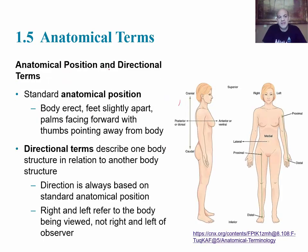Looking at the anatomical position and directional terms, the first thing is to understand what is meant by standard anatomical position. The image on the far right shows an individual standing in anatomical position — standing up straight, feet slightly apart and facing forward, palms also facing forward, which puts the thumbs facing toward the sides in the lateral direction. This is the position we will reference when finding parts of the body and describing how parts move.